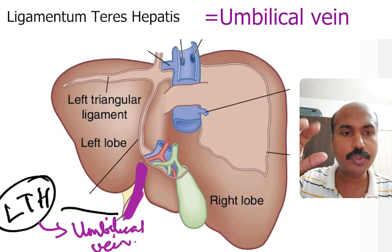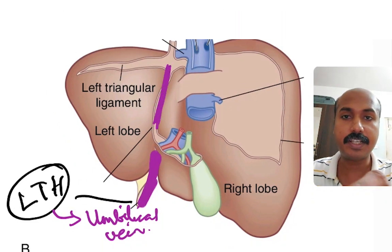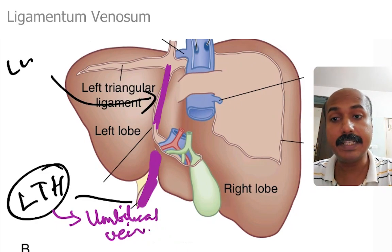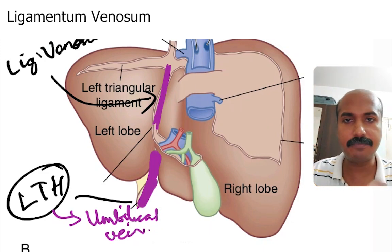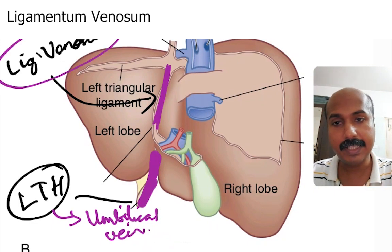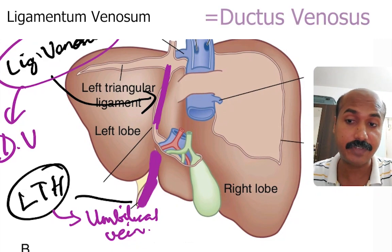Now we are going into the upper part of that H. The upper part of that H is the ligamentum venosum. So what is ligamentum venosum? It is a remnant of a fetal structure called ductus venosus.